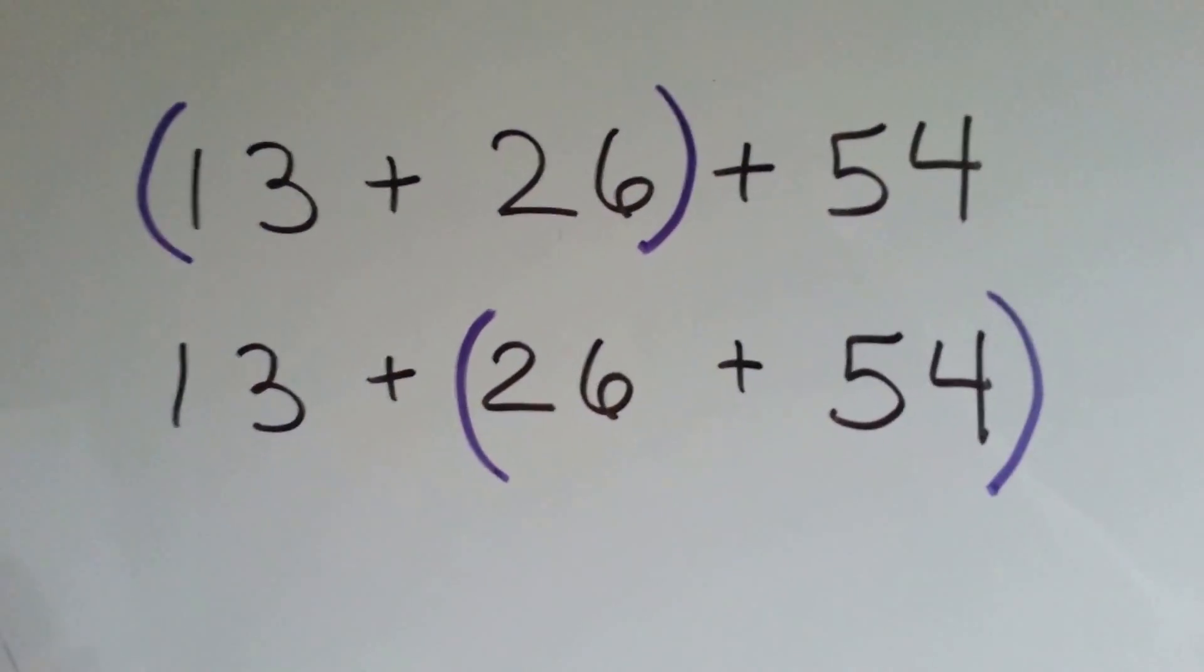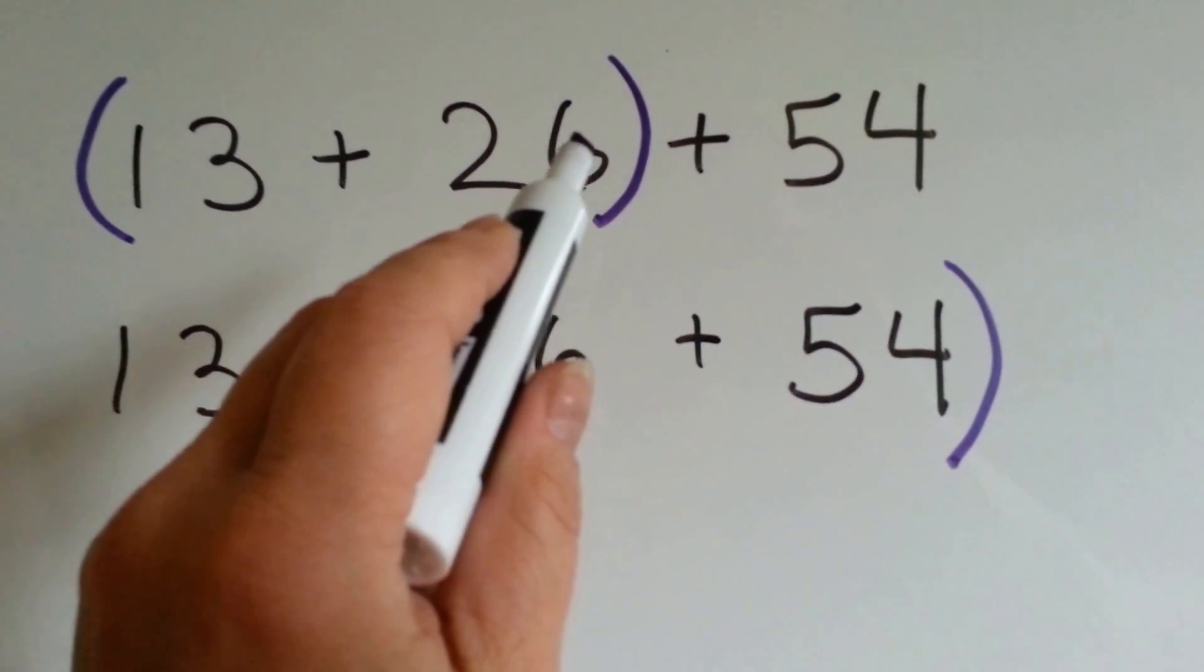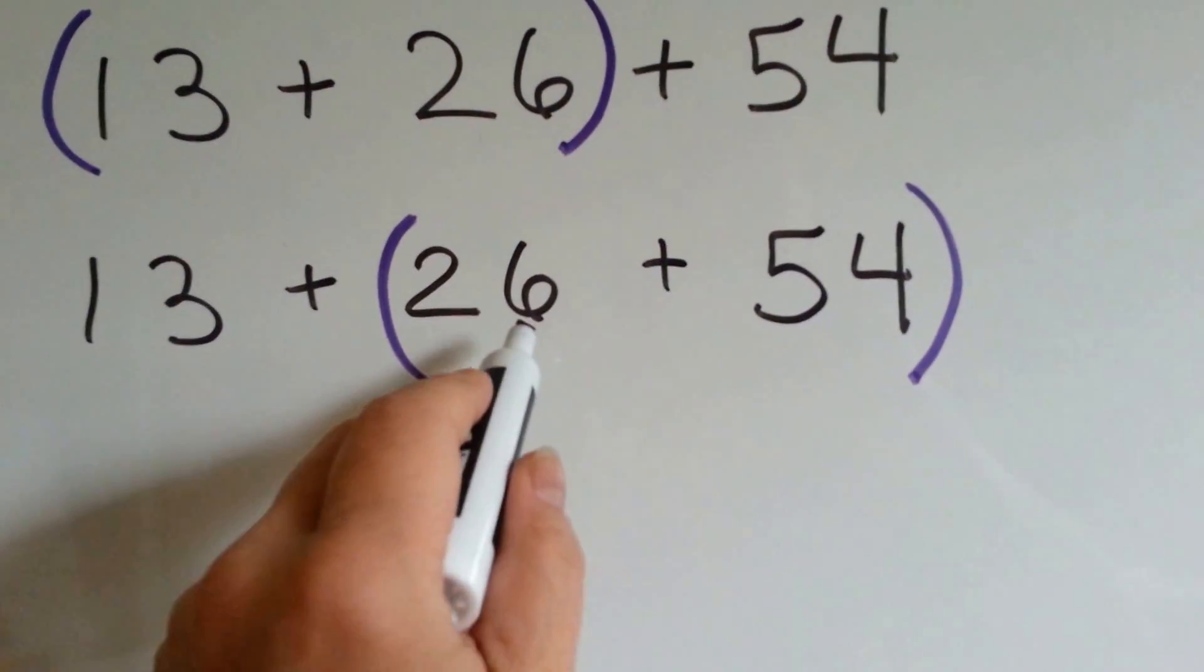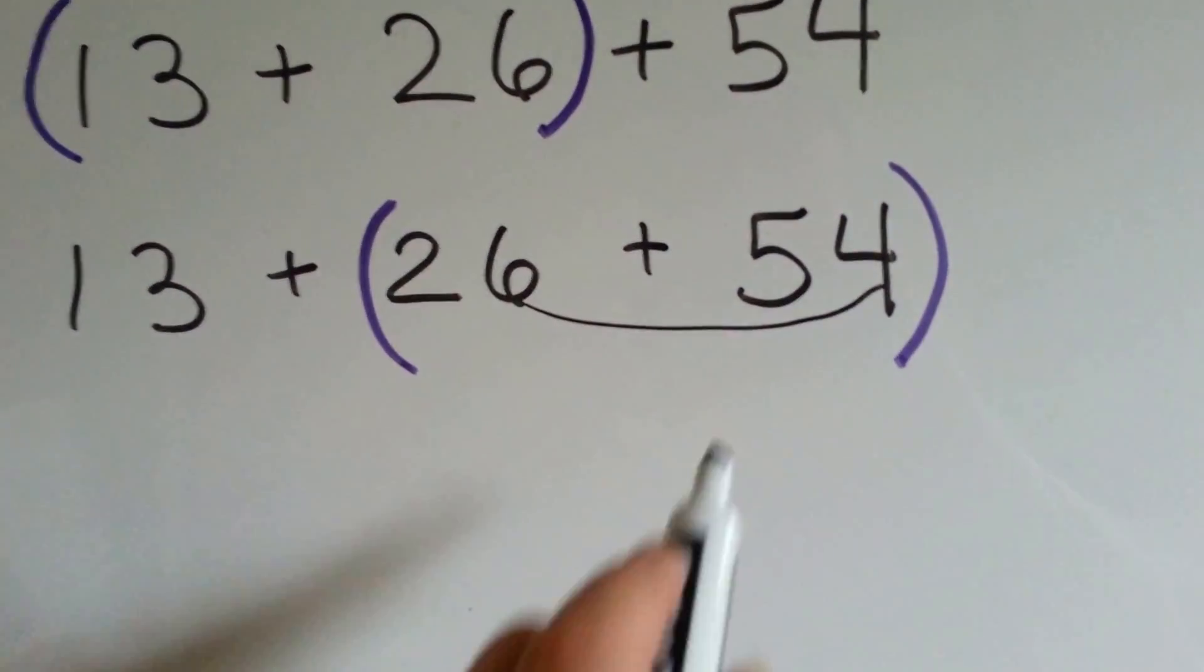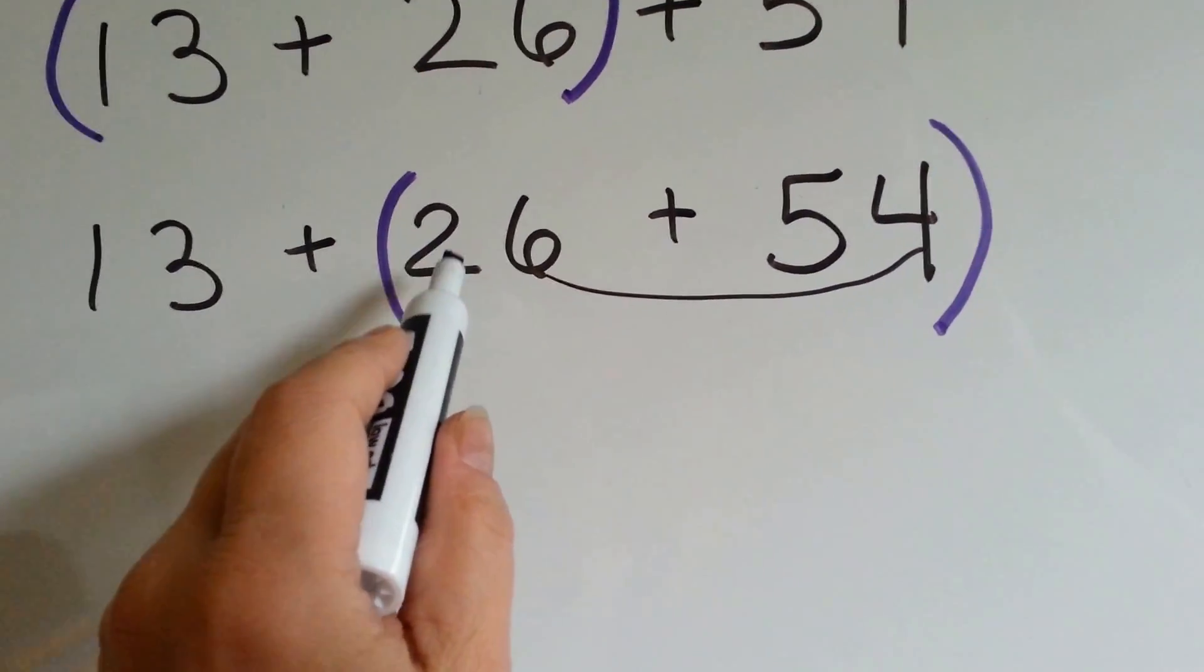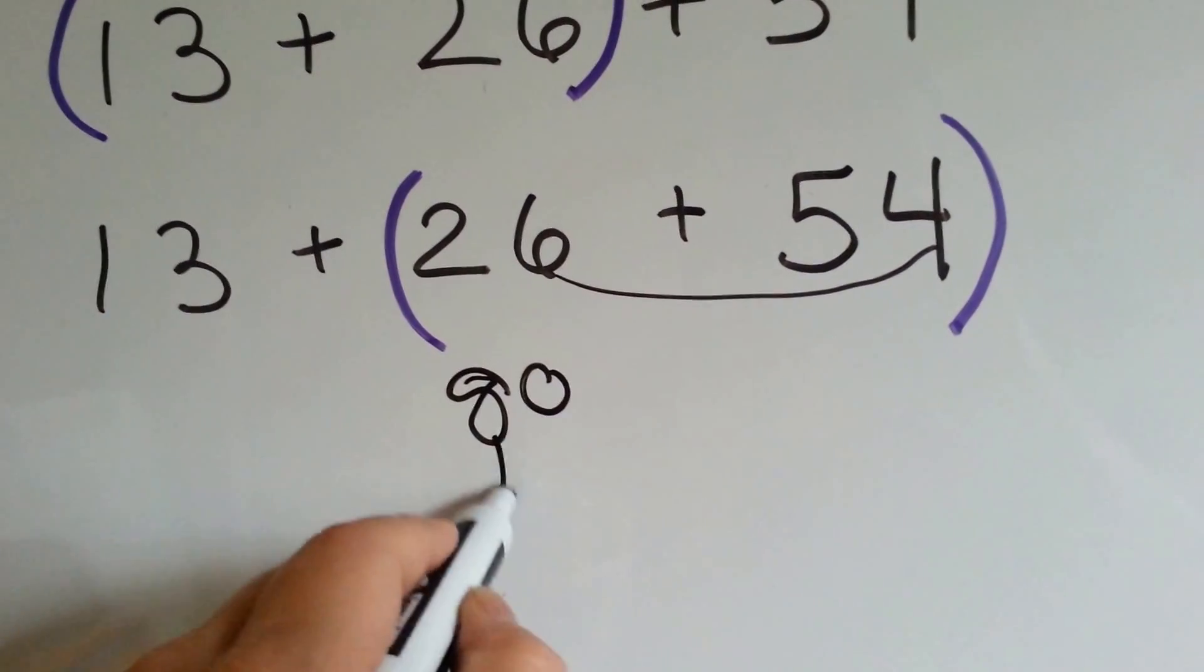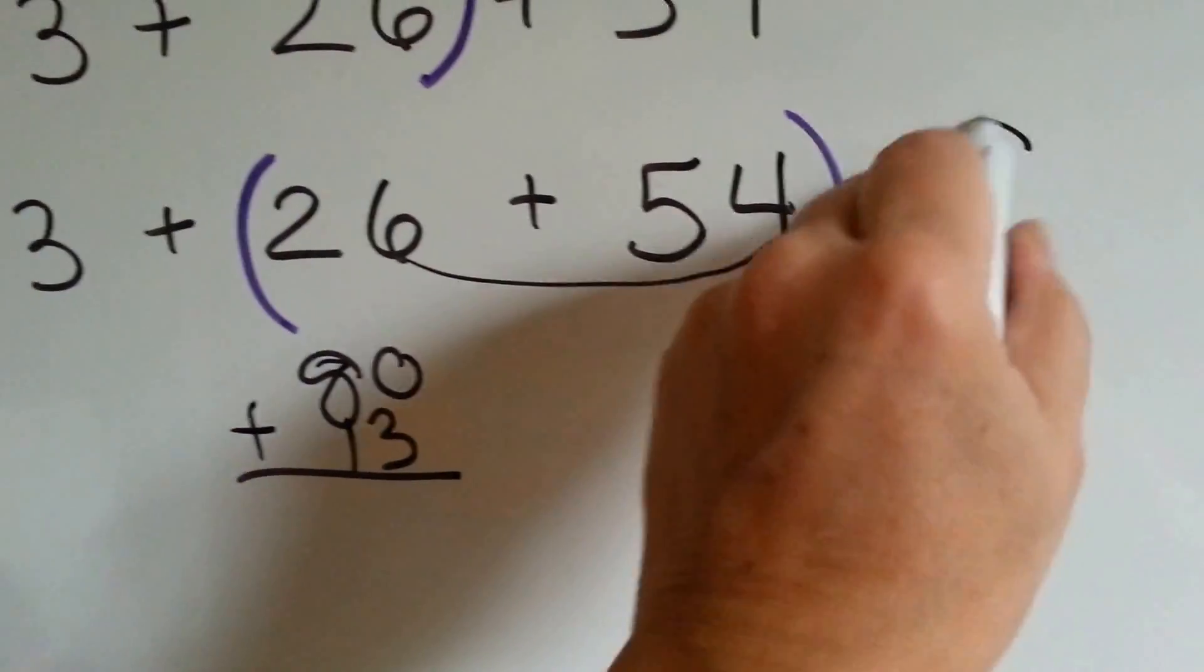How about this one? Which one would be the easiest to add together first? 13 plus 26 first? Or 26 plus 54 first? Look at the ones. 6 and 4 makes 10. And 5 more 10s would be 60. And 2 more would be 70, 80. So now we have 80 plus 13. What's that? 93.